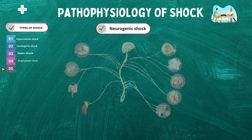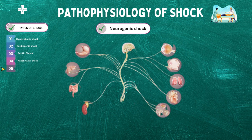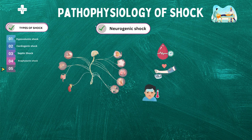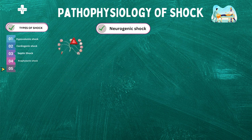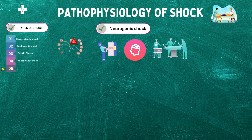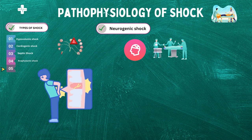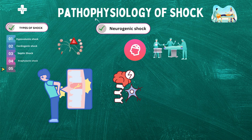Next, neurogenic shock. Neurogenic shock is a type of shock that occurs as a result of damage to the nervous system, specifically the sympathetic nervous system. This system is responsible for controlling many vital functions in the body, such as heart rate, blood pressure, and body temperature. When the sympathetic nervous system is damaged, it can no longer regulate these functions, leading to a state of shock. The body is no longer able to compensate for changes in blood pressure and heart rate, resulting in a drop in blood pressure and reduced blood flow to the organs. Causes include spinal cord injury, brain injury, and certain medications such as anesthesia. Spinal cord injury is the most common cause and results in a loss of sympathetic tone and an inability to regulate blood pressure and heart rate.